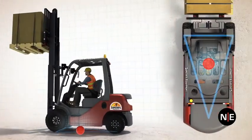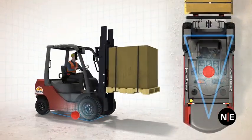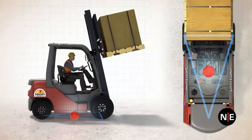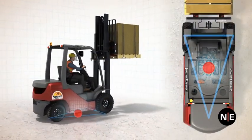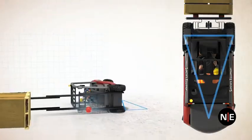As you raise and lower loads, make quick turns, and tilt the mast, the center of gravity shifts inside the stability triangle. The center of gravity must remain inside this triangle, or the forklift will turn over.